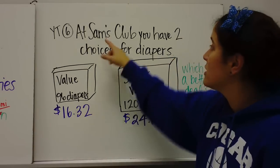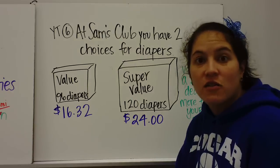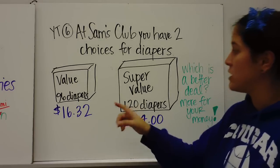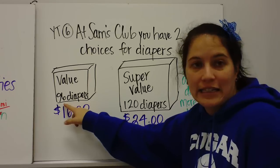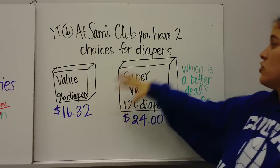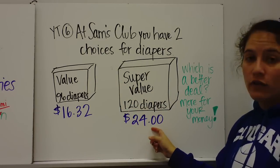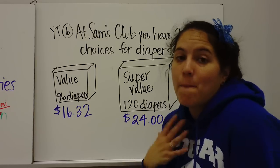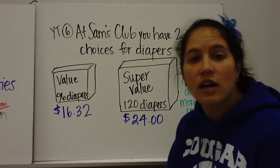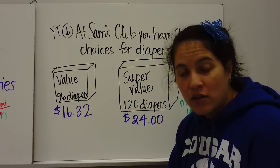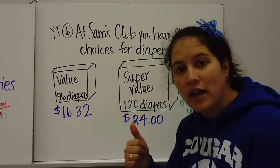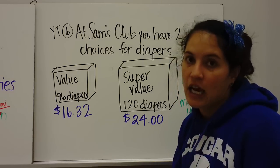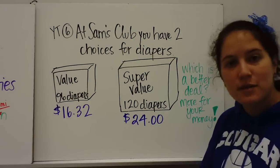All right. You try number six. You're at Sam's Club and you have two choices for diapers. Do I need some diapers in my future? Yes. Because you know I'm having a baby. So I'm going to need some diapers. So if I'm going to the store, I have two choices. I can get the value diapers. I can get 96 diapers for $16.32. Or I can get the super value where I can get 120 diapers for $24. So my question to you is help me make the better purchase. Which one is a better deal? Which one do I get more for my money? Which one costs the least per diaper? So you're going to set up a rate and then find a unit rate. And we're going to go over this question tomorrow in class. Hopefully you can tell me which box of diapers to get so I can make my money go farther. And we'll talk about this tomorrow. Bye.